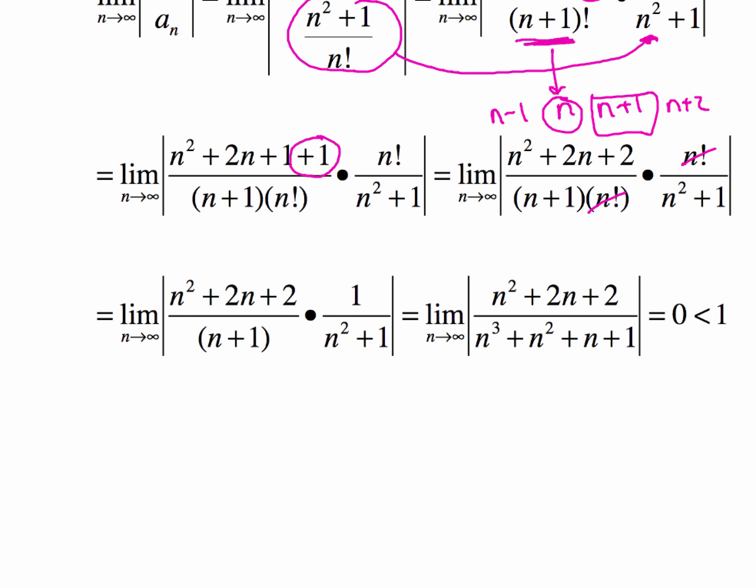When you have n plus 1 times n squared plus 1, so we're distributing right here. So we're taking this, and we're going to end up here with n cubed plus n squared plus n plus 1, all that in this denominator.